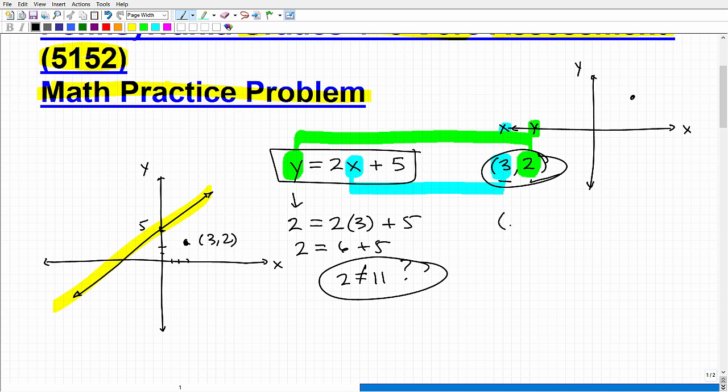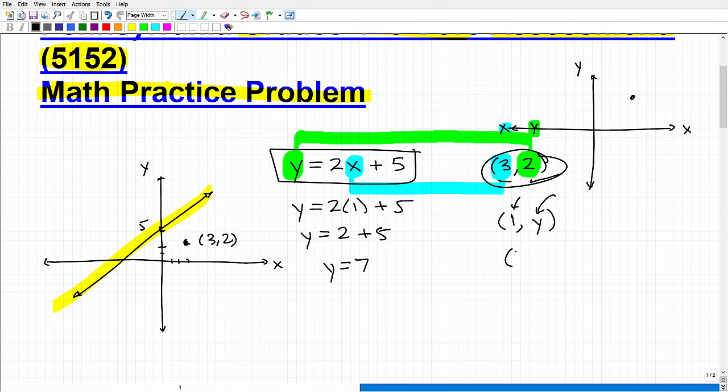We can just make one up. Let's use the point 1 for X and get a Y value. What is Y when X is 1? Y would be equal to 2 times 1, or 2, plus 5, so Y would be equal to 7. So is the point (1, 7) on this line? Let's verify that. Our Y value is 7, my X value is 1. I just plug everything in and check this equation: 2 times 1 is 2, plus 5, so 7 is in fact equal to 7. That is a true statement. So you can see this is yes, and the previous one is no.